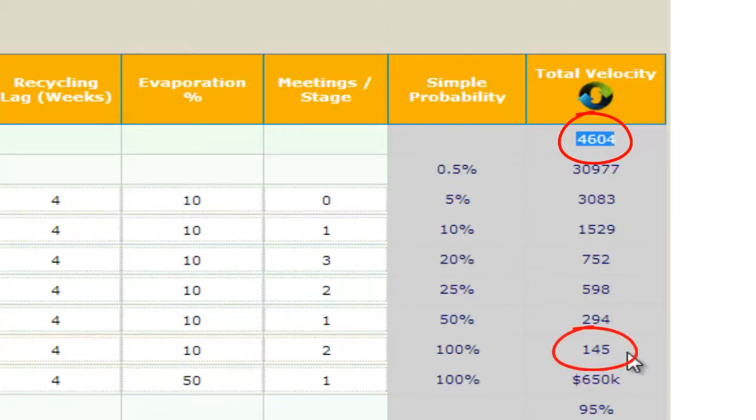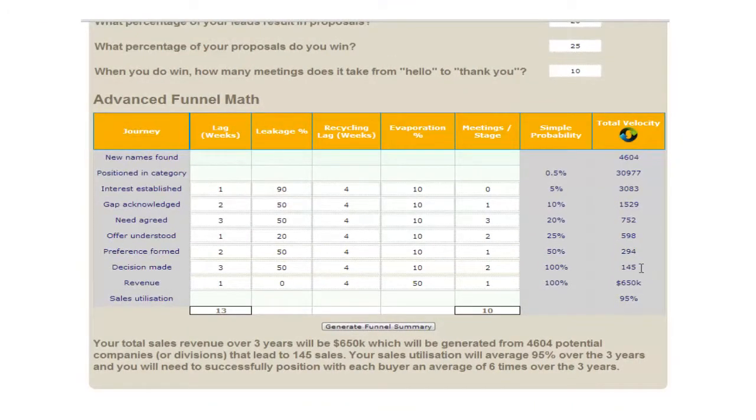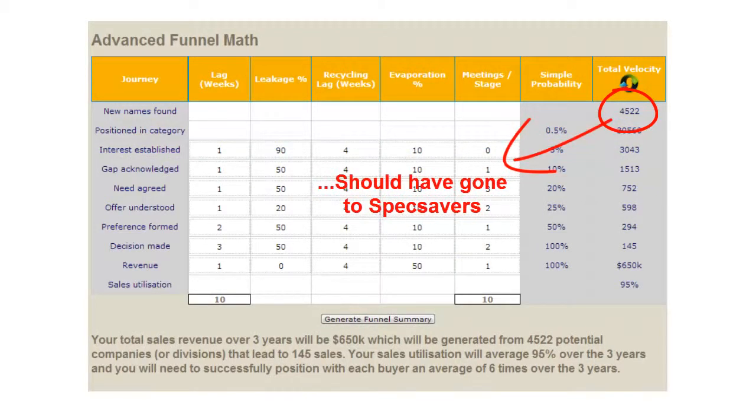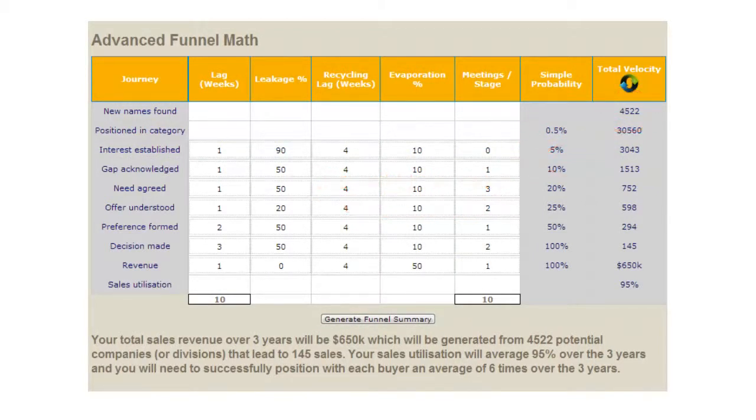Now if we shorten that cycle, let's bring it down to 10 weeks. Let's lose 3 weeks from the total. Take a look. The number's now 4,569. Really? That's all that's going to happen? By reducing your sales cycle or at least trying to reduce your sales cycle by 3 weeks out of 13, you're going to have, what's that, 35 fewer buyers. That's less than 1%.